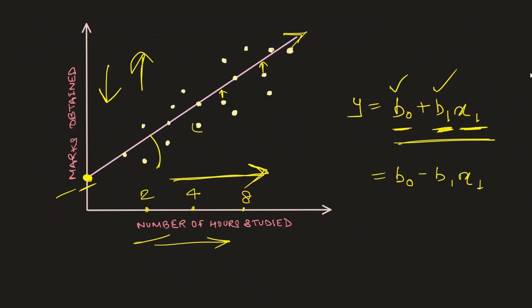The final assumption is normality of residuals. Residuals are the data points that the straight line is missing. By normality of residuals, it means the variation of residuals from the straight line in one area should be equal to the variation of residuals in another area. If the normality of residuals is getting imbalanced, it is not suggested to use linear regression.